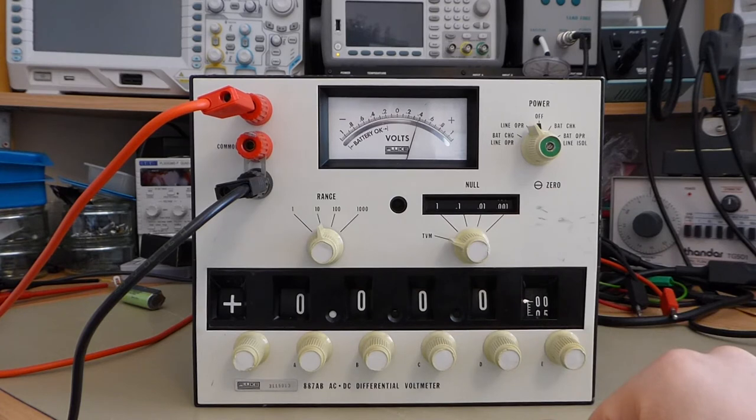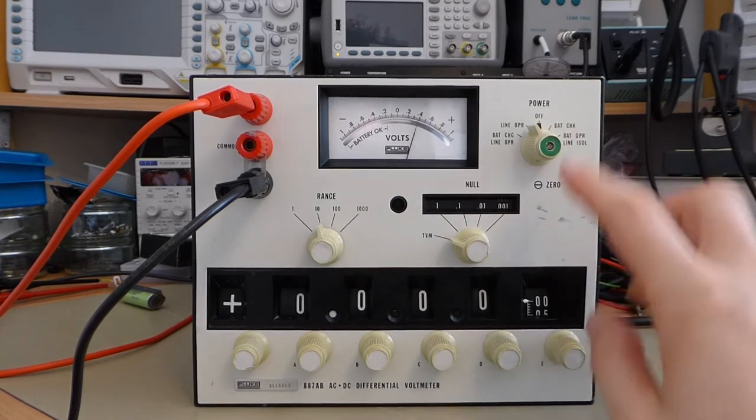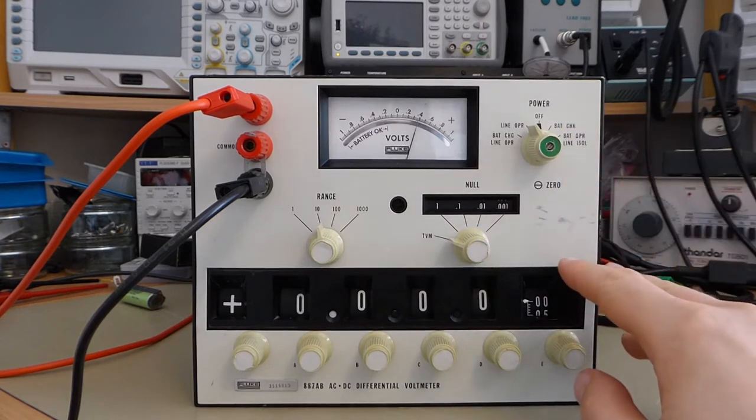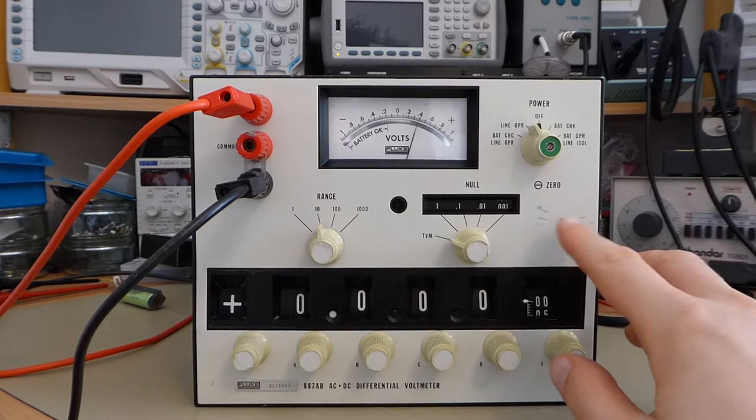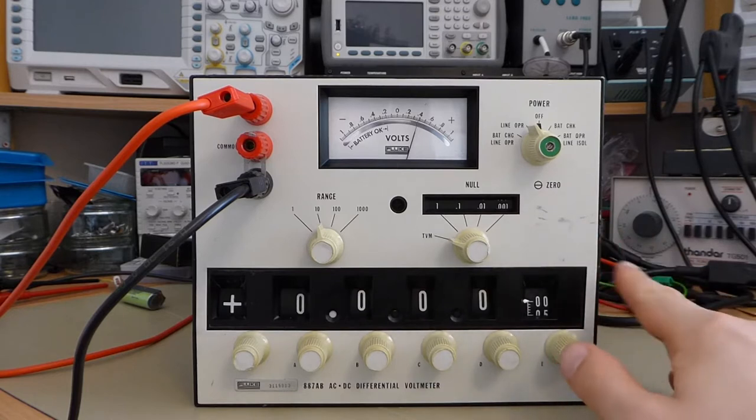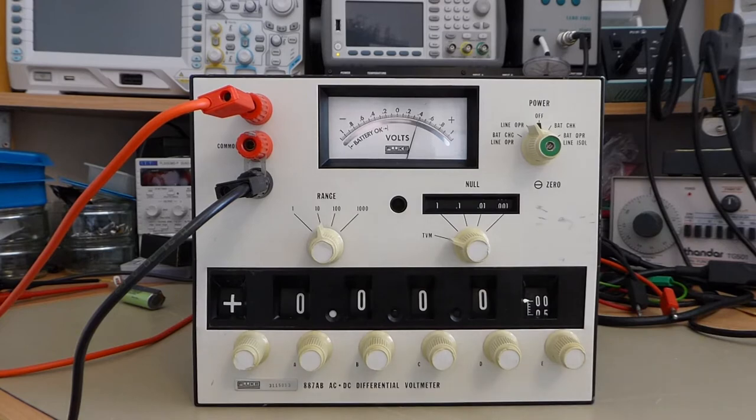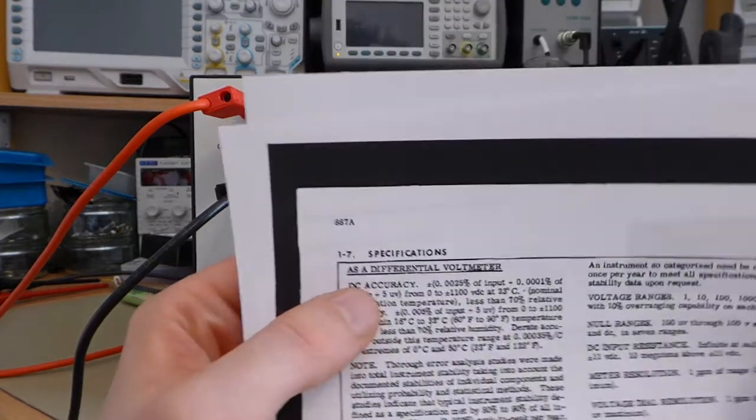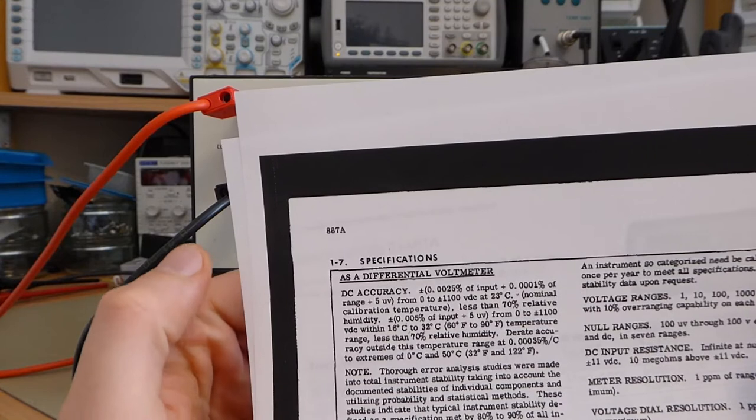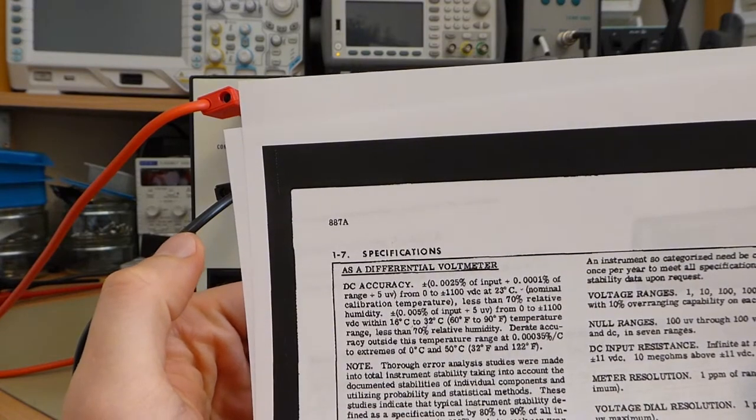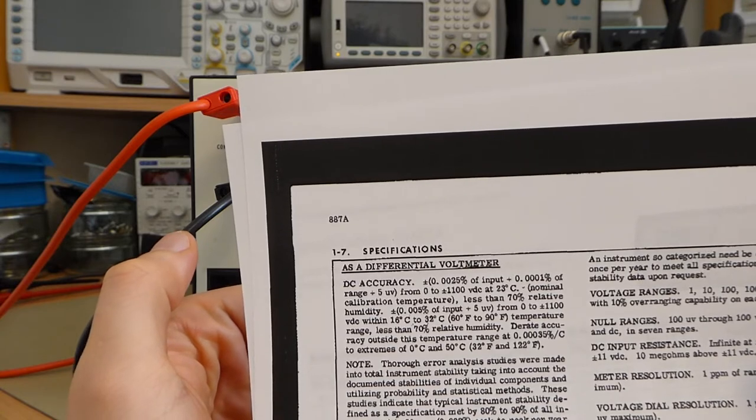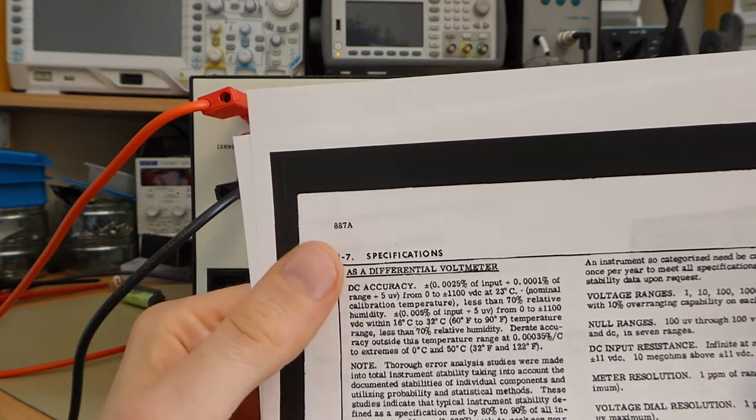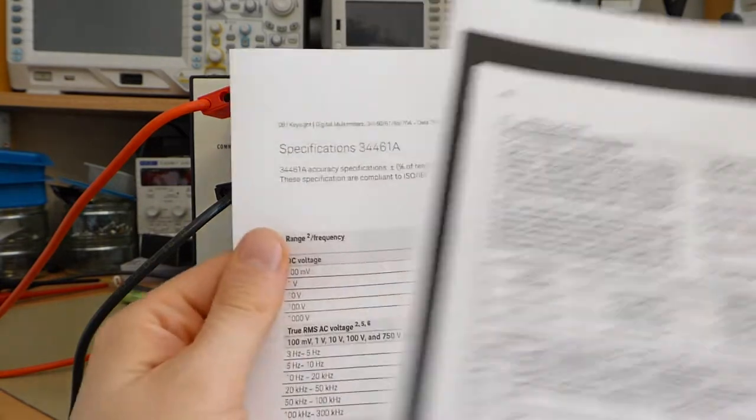As far as specs are concerned, this thing is actually really amazing. The manual I have is from 1960-something. This unit is from the early 80s, so that must have been towards the very end of when they made it. But if you look at the specs, it's really impressive. The headline figure they give is a DC accuracy of 0.0025% of the input and 0.001% of the range, which is really good.